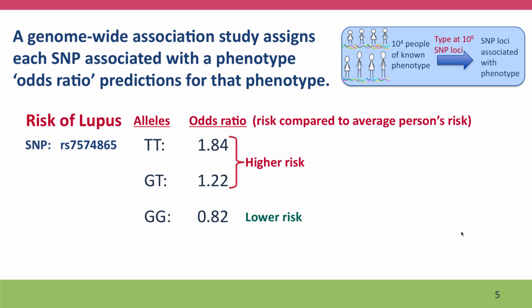Here's how it plays out with a particular phenotype: susceptibility to the autoimmune disease lupus. Genome-wide association studies have found that high risk of lupus is associated with T alleles of this particular SNP. If you have two T alleles, your risk is 1.84 times the risk of the average person. If you're heterozygous with a T and a G allele, your risk is slightly higher than average. But if you have two G alleles, your risk is lower than average.